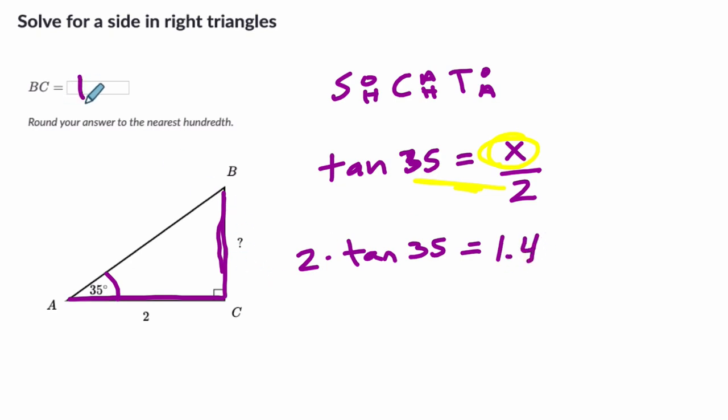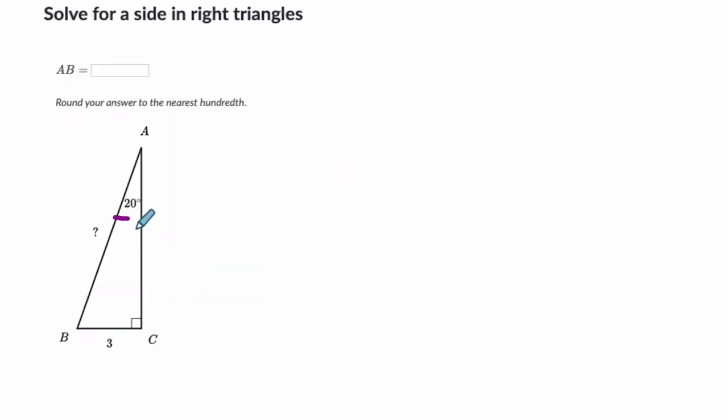So it's 1.4. And again, that seems like a reasonable length. I'm not getting anything crazy. It looks like if this is 2 down here, 1.4 seems reasonable. In the last one, we have this angle, 20, and we have this side, 3, which is an opposite.